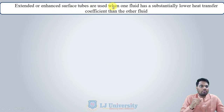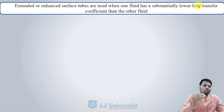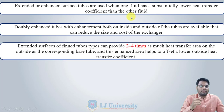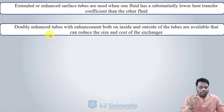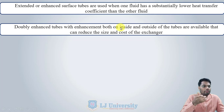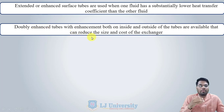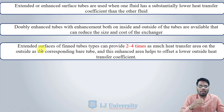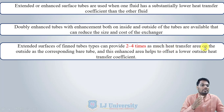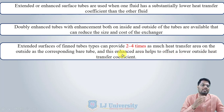Extended or enhanced surface tubes are used when one fluid has a substantially lower heat transfer coefficient than the other fluid. Doubly enhanced tubes — with enhancement both on the inside and outside — are available and can reduce the size and cost of the heat exchanger. The extended fin tube surface can provide two to four times as much heat transfer area on the outside as the corresponding bare tube, helping to offset a lower outside heat transfer coefficient.